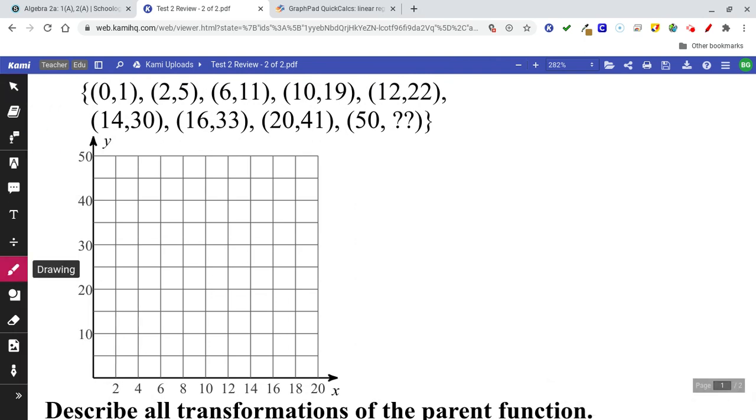Let's plot the points. First point is (0,1), (2,5), (6,11), (10,19), (12,22), (14,30), (16,33), (20,41). And then the last one we'll have to save for later. That's going to be our prediction.